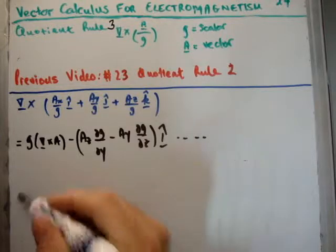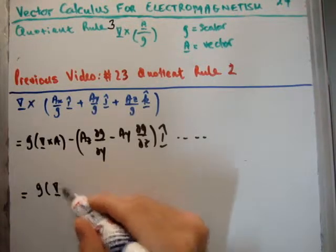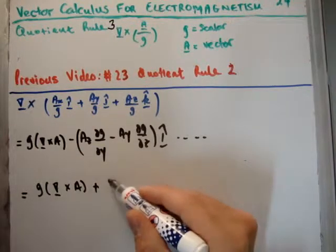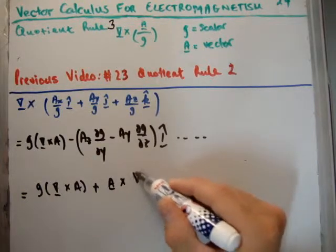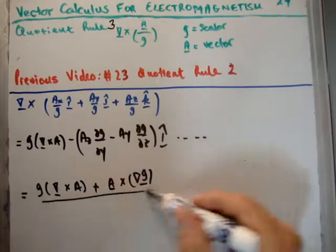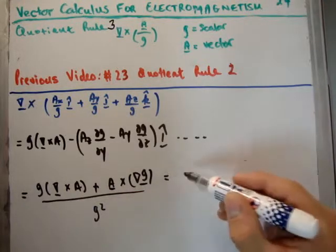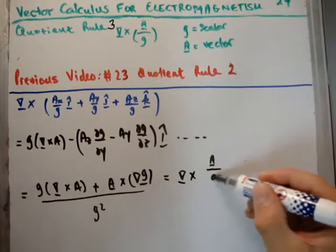So, the result is that we have g, we have the curl of A, and this other term is plus A times the curl of the gradient of g, all, of course, divided by g squared, which, for the first time, I'm going to write in. And that's simply going to be the curl of the vector A divided by the scalar g.